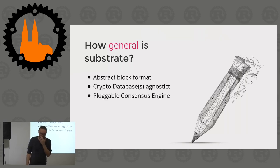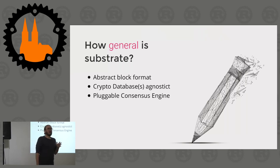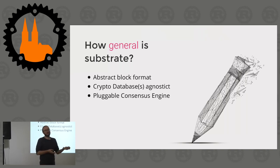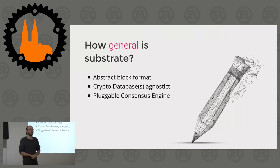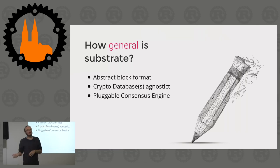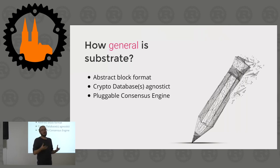The same is true for consensus - which consensus algorithm you use, meaning how you figure out what the next valid block is. There are different methods: the most famous is Bitcoin's where anybody can solve a puzzle to create the next block. But there are also more common ones coming out of database cluster management systems like Raft or Paxos, where a small set of authorities decides what the next state is. You can choose which one you like.